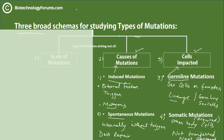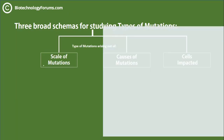Now let's shift to a very significant classification scheme, which is the scale of mutations — whether the mutation is happening at a very small level or at a very large level. What do we mean by small and large level?